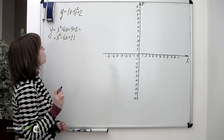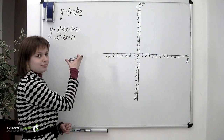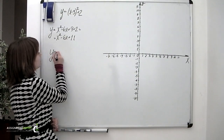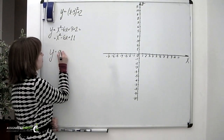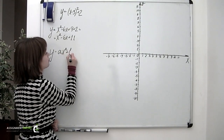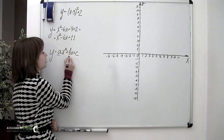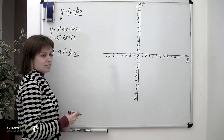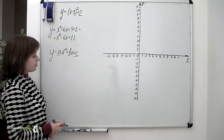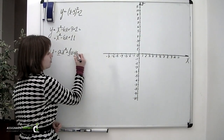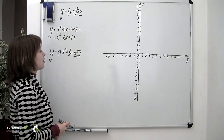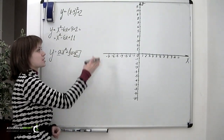An equation of this kind is called a quadratic equation. Any equation of the form y equals a times x squared plus b times x plus c, where a, b, and c are constants, is called a quadratic equation, or an equation of the parabola. The free term c in an equation of the parabola is its y-intercept — the point where the curve crosses the y-axis.